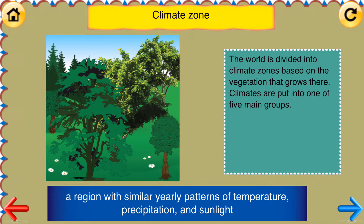Climate zone. A region with similar yearly patterns of temperature, precipitation, and sunlight. The world is divided into climate zones based on the vegetation that grows there. Climates are put into one of five main groups.